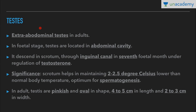The testis is the primary sex organ and the male gonad. Like the ovaries to which they are homologous, they are components of both the reproductive system and the endocrine system. Their main function is to produce sperm by spermatogenesis and to produce androgens, primarily testosterone. In adults, the testis are extra-abdominal, but in the fetal stage they are located in the abdominal cavity.